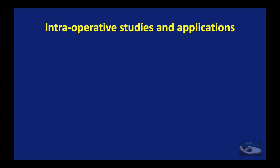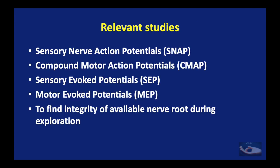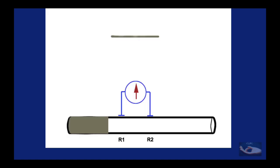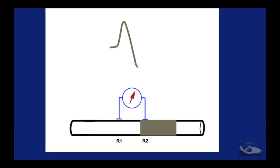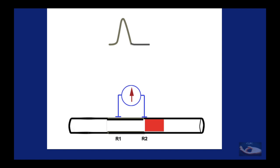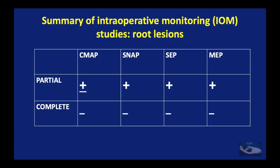Intraoperative nerve studies also play an important role. All recordings can be done intraoperatively to find the integrity of the available nerve root during exploration, especially in the brachial plexus. When we explore an injured nerve and find it anatomically intact but still suspect a conduction block within it, we can do an intraoperative recording. If the segment under consideration is normal, a normal action potential of the nerve will be recorded; if there is injury in that segment, the normal action potential will not be recorded. Analysis of intraoperatively recorded potentials also helps determine whether it is a partial or complete lesion of that particular nerve segment.